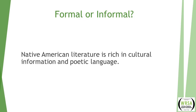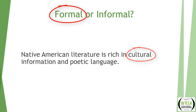Formal or informal: 'Native American literature is rich in cultural information and poetic language.' This is considered formal. Ask yourself why — is it specific? Do you understand exactly what they're talking about? It's not vague. It tells you what kind of information (cultural) and what type of language (poetic). This is very specific, formal language. Now consider: 'Native American literature isn't rich in Puritan characteristics.' The contraction gives it away as informal, and it's also a bit vague.